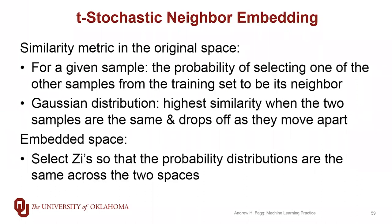The way that it measures similarity is by constructing a probability distribution. Specifically, for a given point in the training set, we construct a measurement of the probability that any other point should be selected as a neighbor. The basis of this probability distribution is a Gaussian distribution, so if another point is right next to the point in question, that has the highest similarity, and as that point moves further away, the probability drops off.